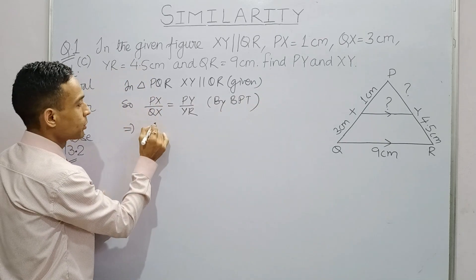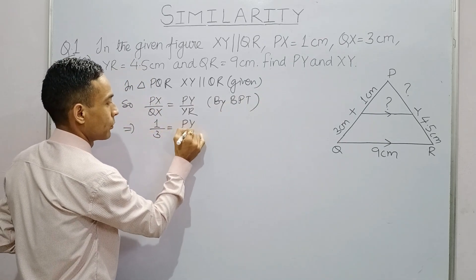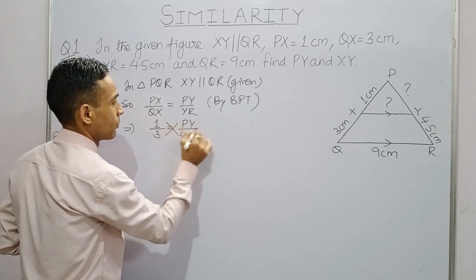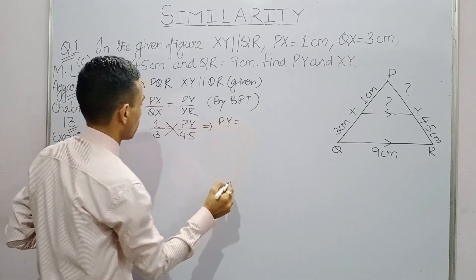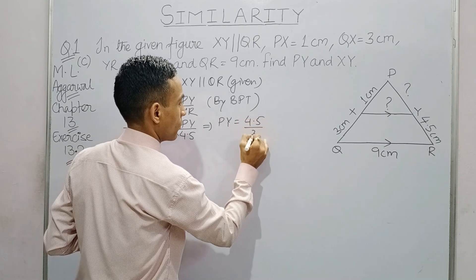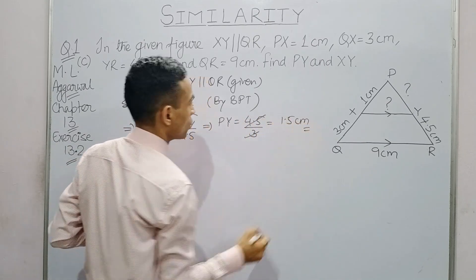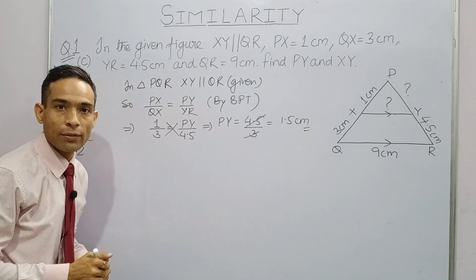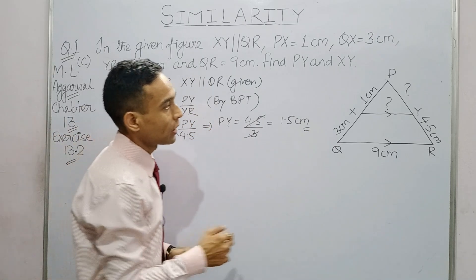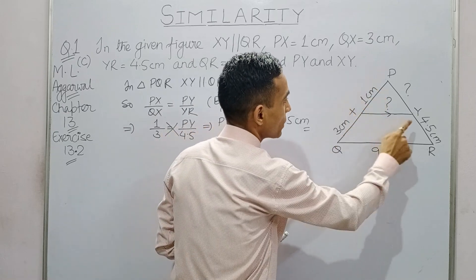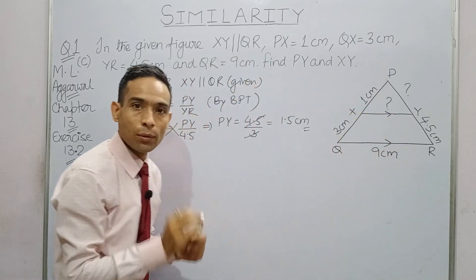Substitute the values. So PY is coming 1.5 cm. Now we need to find out XY, for which we will prove that triangles PXY and PQR are similar.